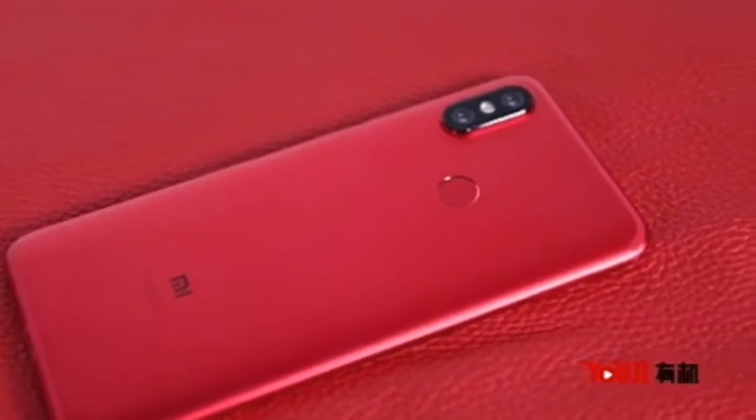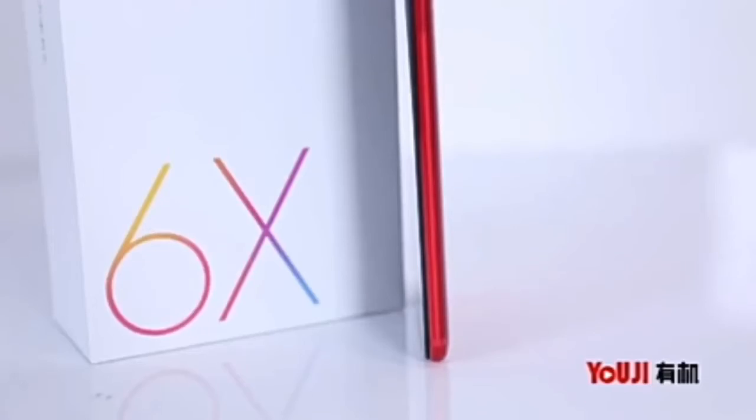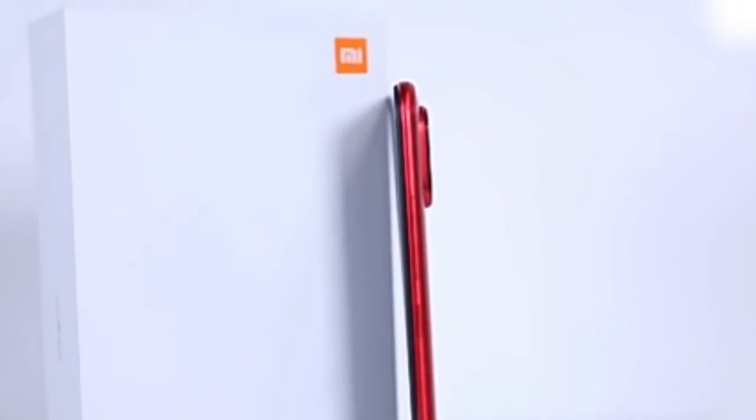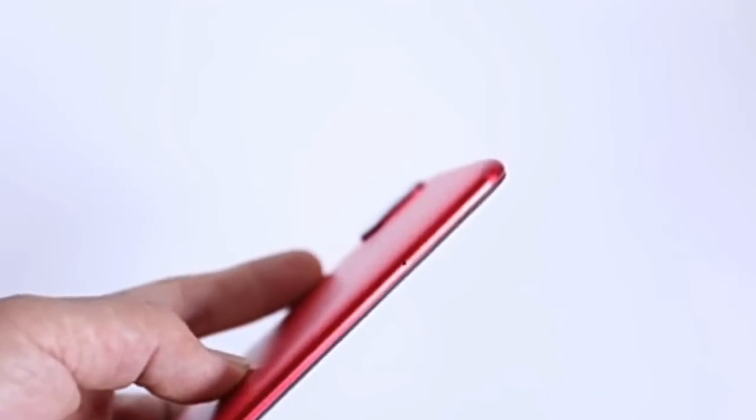The back of the phone features U-shaped antenna lines on the top and bottom edges, like its predecessor, the Mi 5X. The vertical dual camera setup and fingerprint reader reside on the rear. The top features an IR blaster, while the bottom has a USB-C port separating two external speakers.